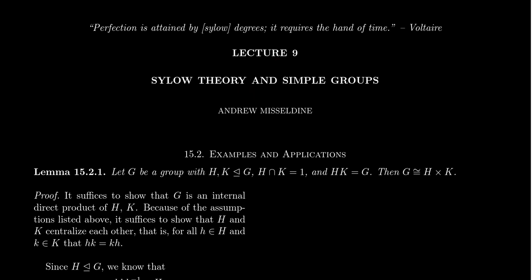What do Sylow subgroups have to do with simple groups? The short answer is: if you have a Sylow P subgroup that's unique, then it has to be normal. Additionally, if it's not unique, then it can't be normal. This is a consequence of Sylow's second theorem. Also, Sylow's third theorem gives us the ability to count the number of Sylow P subgroups.